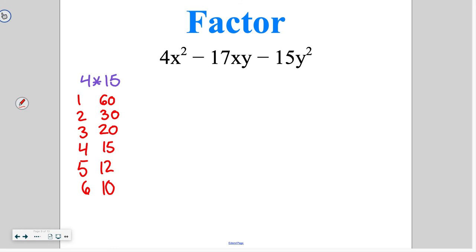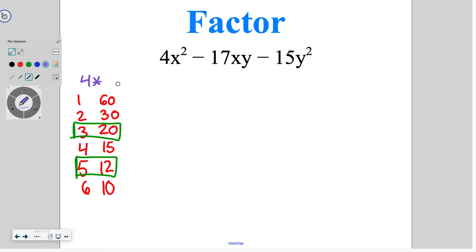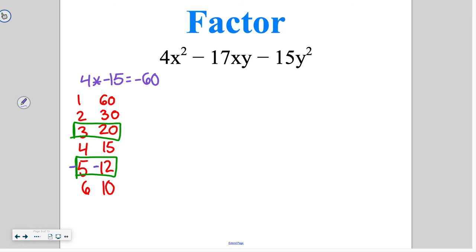From those factors, we need something that gets us to negative 17. It's important to list all factors because in this one there are two pairs that could get you to 17: 3 and 20, or 5 and 12. But we're multiplying 4 times negative 15, so we need negative 60. Negative 5 times negative 12 gives positive 60, while 3 and negative 20 gives negative 17 and negative 60. So 3 and negative 20 is the factor pair we'll use.